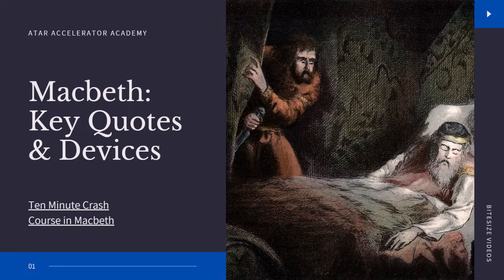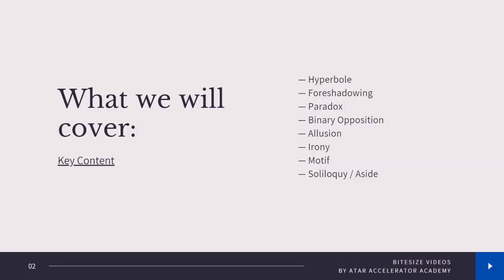So apparently you kids are allergic to reading, so I'm going to break this down for you all and talk you through it — a little bit of a talk-through, if you will. Looking at Macbeth: key quotes and literary devices. We are going to look at hyperbole, foreshadowing, paradox, binary opposition, allusion, irony, motif, and soliloquy and asides.